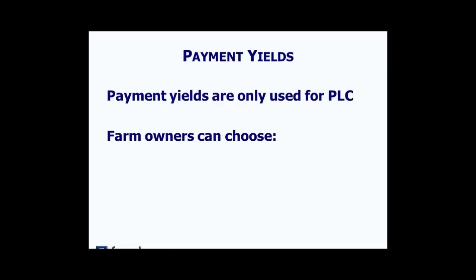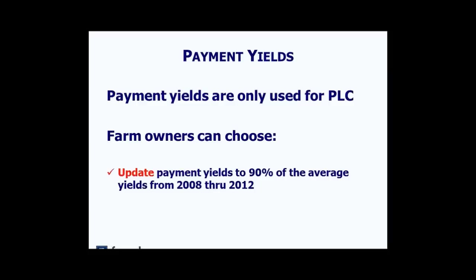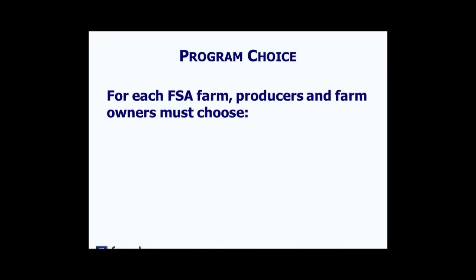For payment yields — one thing to keep in mind — payment yields are used only for the Price Loss Coverage Program. Farmers can choose to update their payment yields to 90% of the average yields from the 2008 through 2012 crop years. Farm owners can also choose to keep their current payment yields at the levels used from the 2008 Farm Bill for the counter-cyclical payments program. So you can keep everything as is or update to 90% of the average yields from 2008 to 2012.